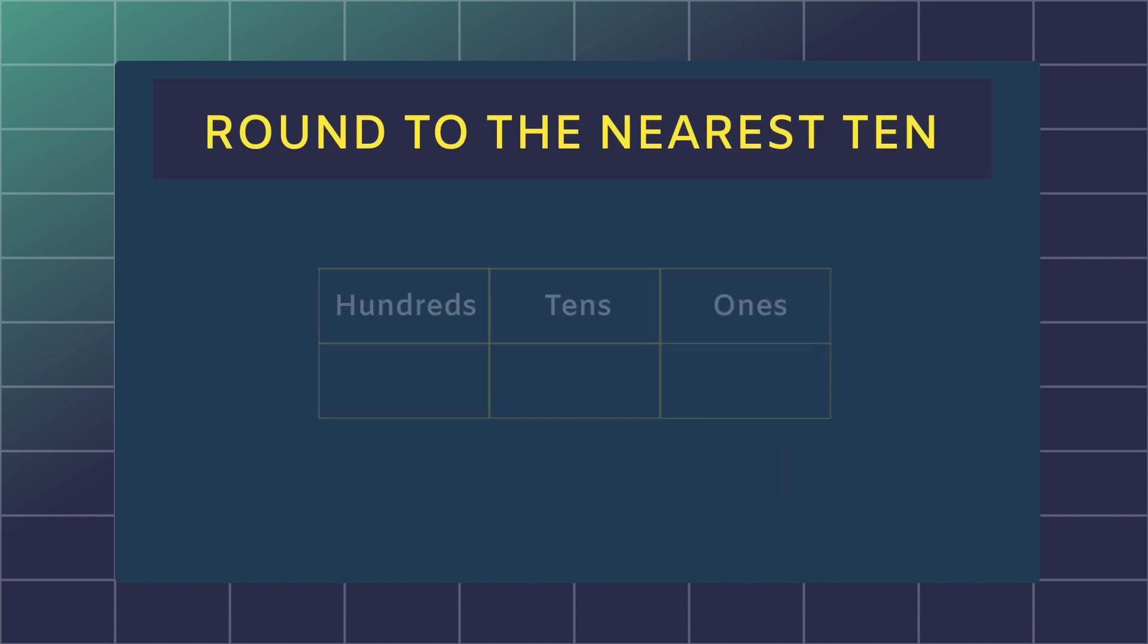Take the whole number 718 and round it to the nearest 10. The last digit ends in an 8, so we know we have to round it up. However, we need to know that the 8s in the 1s place will round up the 1s and the 10s.